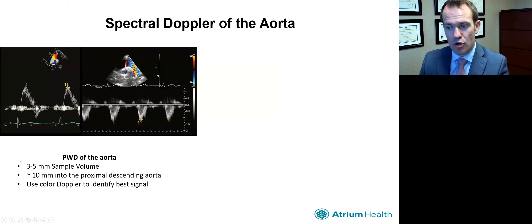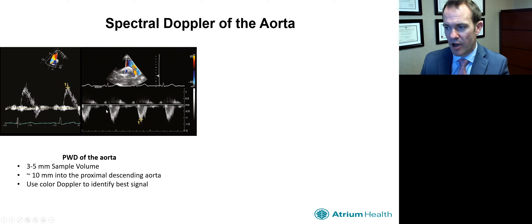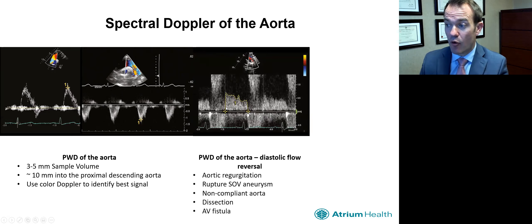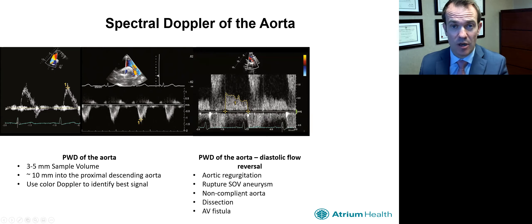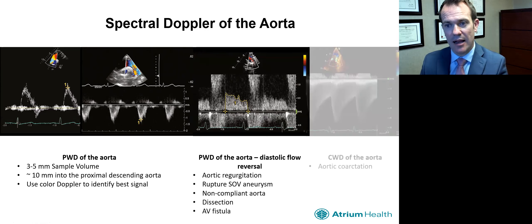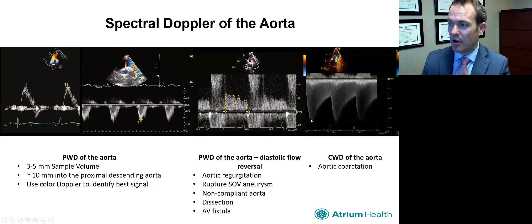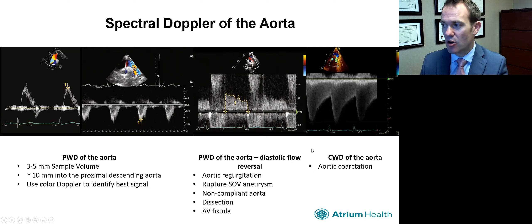For the aorta, we use a sample volume of three to five millimeters. Flow in the ascending aorta goes toward the probe, while flow in the descending aorta goes away from the probe. We look for flow reversal in the descending aorta — the first thing we think of with holodiastolic flow reversal is severe aortic regurgitation, but there are multiple other causes including a non-compliant aorta in an elderly person. A particular pattern in the descending aorta can suggest aortic coarctation.